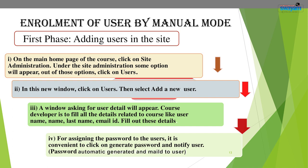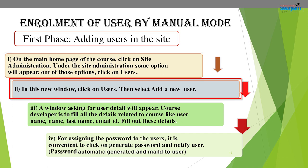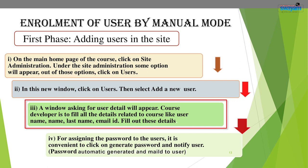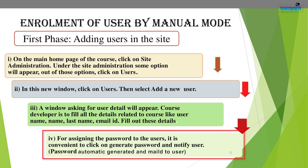Click on Users. In the window, click on Users again, then select 'Add a New User'. A window asking for user details will appear. The admin or teacher fills in all details such as username, last name, and email ID.